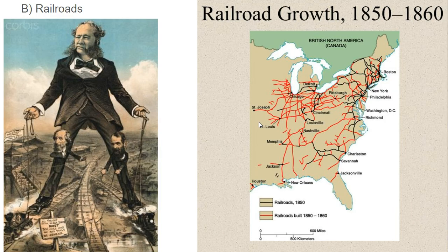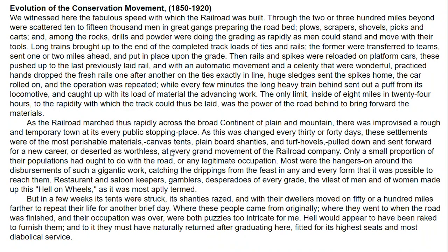We also see a spectacular growth in railroads and railroad mileage, specifically into the western areas of the North. There's a huge railroad building boom led by people like Cornelius Vanderbilt, who is controlling several different railroads by buying out his competitors and building massive railroad trusts. We'll talk more about trusts in the next unit on the Gilded Age, but for now just know that Cornelius Vanderbilt is growing spectacularly wealthy because of the railroad monopoly he is creating.